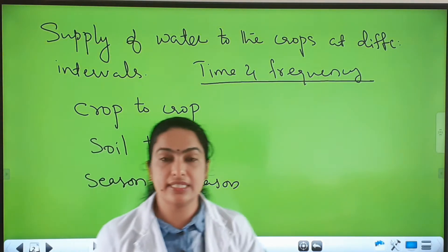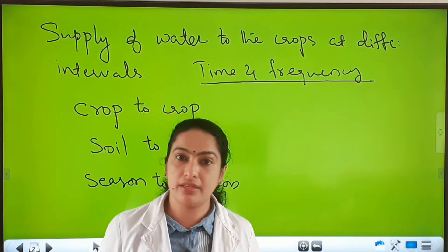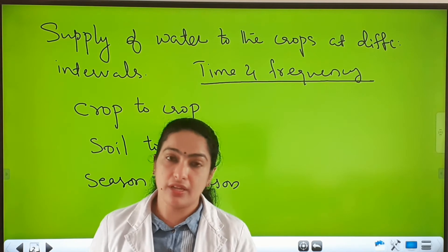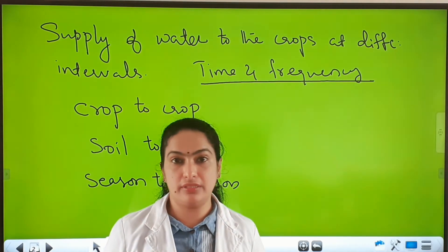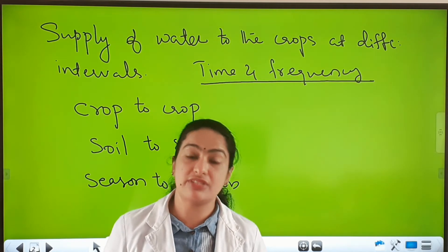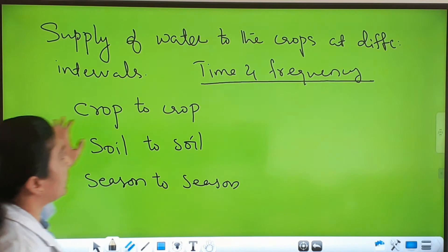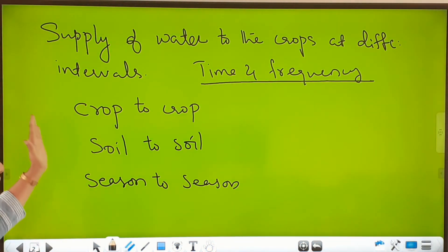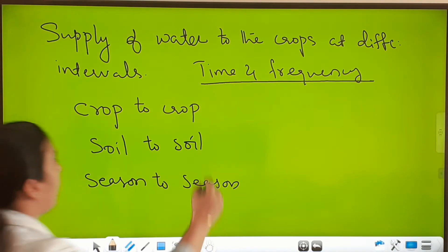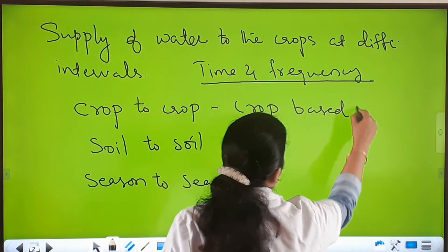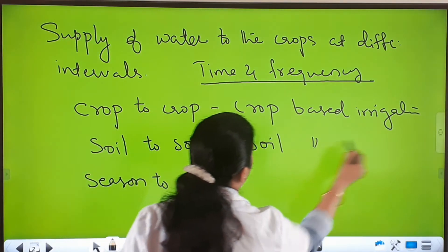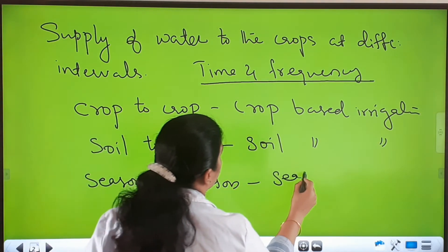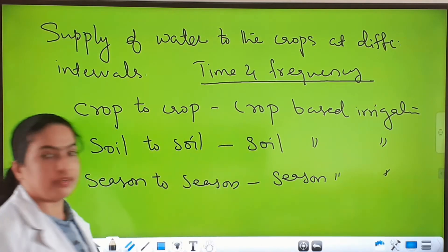Season to season means: if it is raining, there is no need to supply water, or no need for that much irrigation. But if it is summer season, farmers are forced to supply more water — sometimes twice or even thrice in a day. Such irrigation varying from crop to crop is called crop-based irrigation; from soil to soil is soil-based irrigation; from season to season is season-based irrigation.